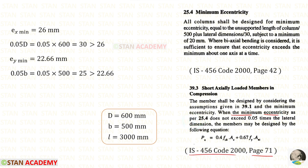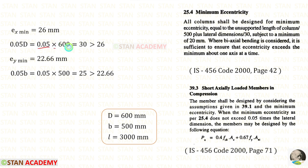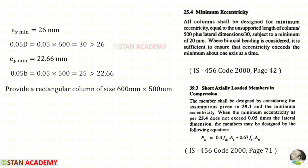Now let us open the code book page number 71. The minimum eccentricity as per clause 25.4 should not exceed 0.05 times the lateral dimensions. Here 0.05 into D gives 30 mm and 0.05 into B gives 25 mm. Since both minimum eccentricities do not exceed 0.05 times the lateral dimensions, this column is an axially loaded column. So let us provide a rectangular column of size 600 mm into 500 mm.